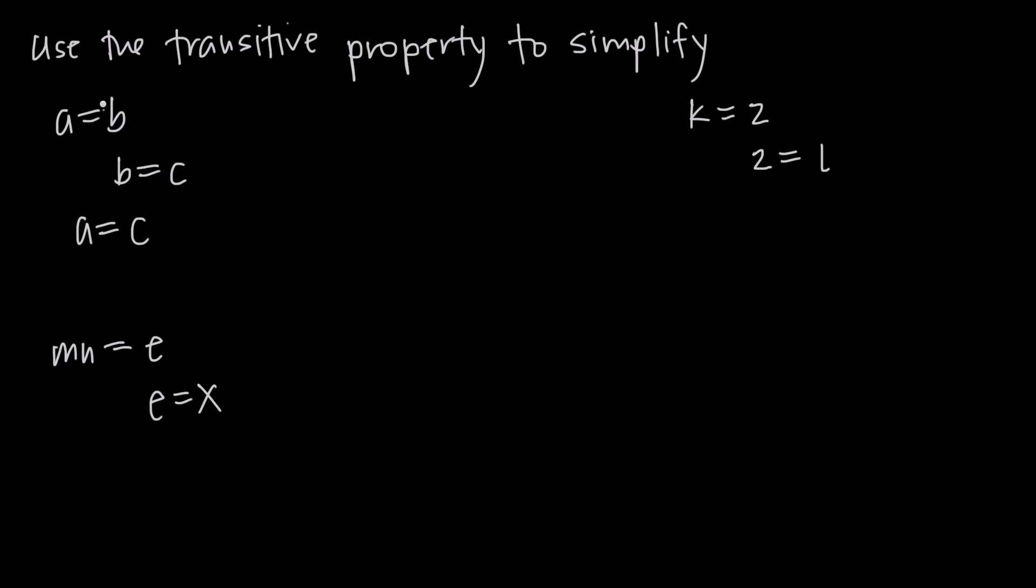This should make sense to us because both of these values, A and C, are equal to B. We said that A was equal to B, and we said that C was equal to B. So if they both equal B, then they're going to equal each other.